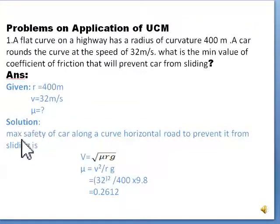Now solution. Maximum safety of car along a curve horizontal road to prevent it from sliding is V = √(μRg). Square this equation: V² = μRg. So μ = V²/Rg. By substituting values and calculating you will get answer 0.2612.